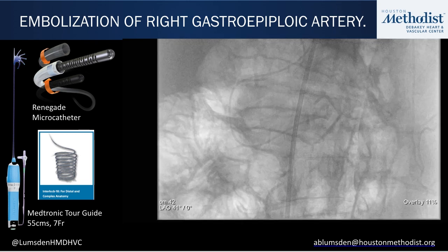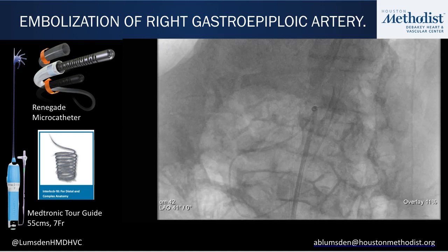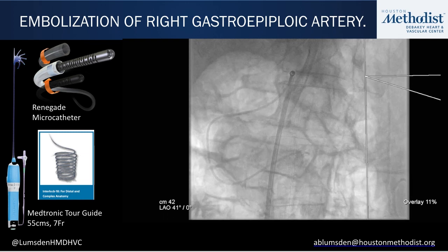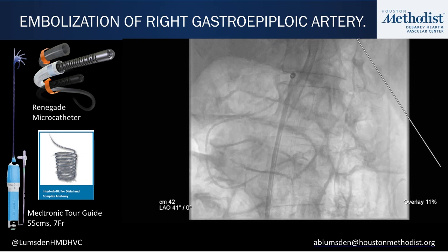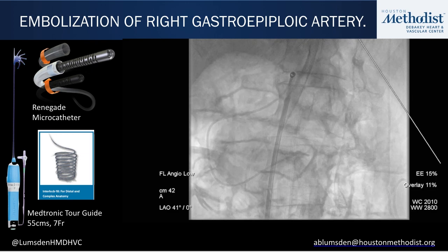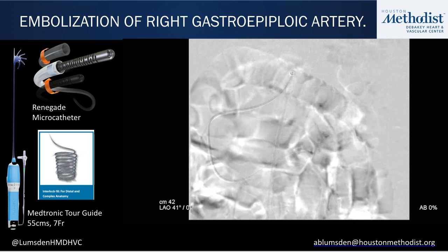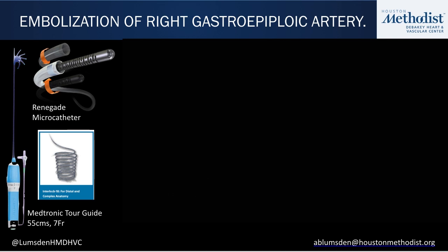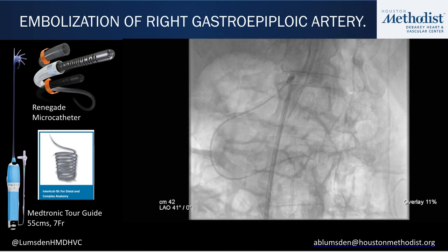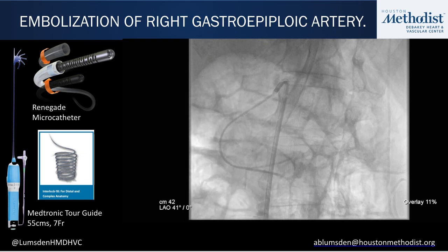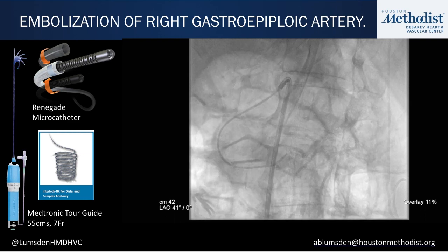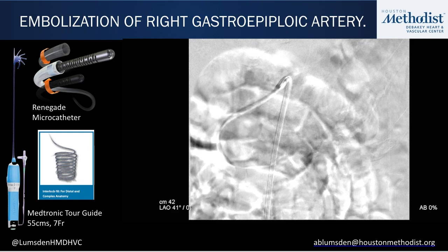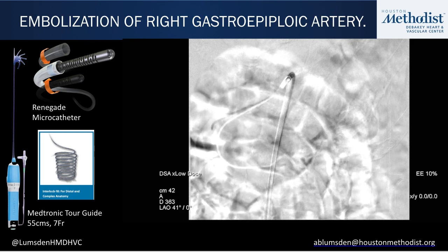At this point we still hadn't identified the source of the bleeding. We reoriented, noting there was a lot of gas in the bowel and the stomach was distended, making visualization difficult. We brought in the collimators to try to even out the radio density of the field. When the wire strayed into side branches we pulled back to get back into the main channel. The technique was to pull back and puff, pull back and puff, until confirmed in the main target artery.